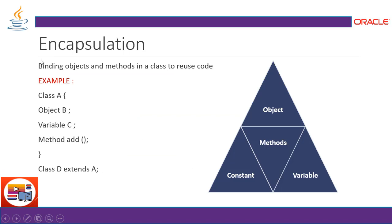Encapsulation is binding objects and methods in a class to reuse code. Think of it as a box that contains objects, methods, variables, and constants — ready to be used by any other piece of code. Class A contains object B, variable C, and method add. Class D extends A, making A the parent class and D the child class. So class D, the child, can use objects from class A.